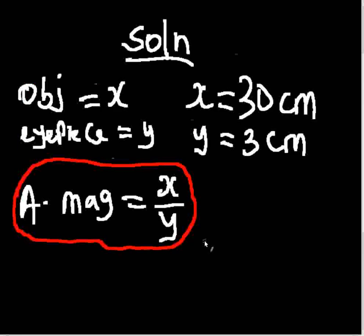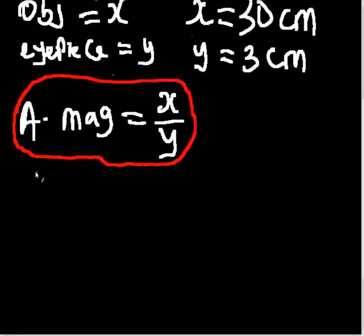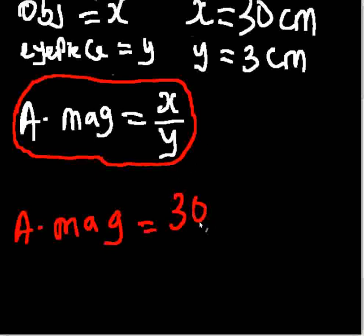We are simply going to plug in the values. We have angular magnification is equal to our X is 30cm, so we have 30 all over Y is 3cm.